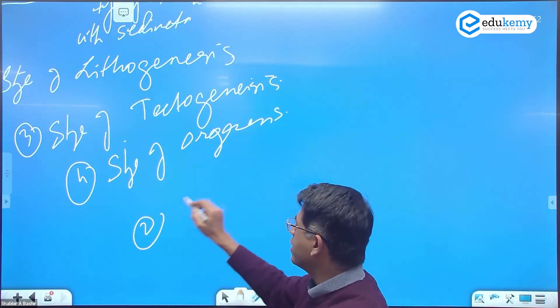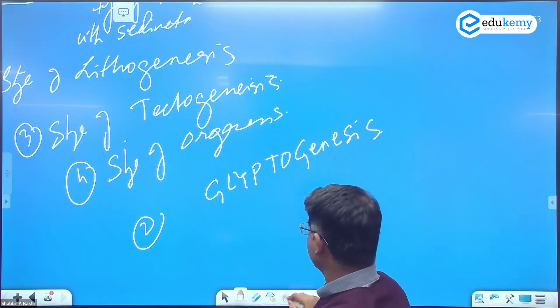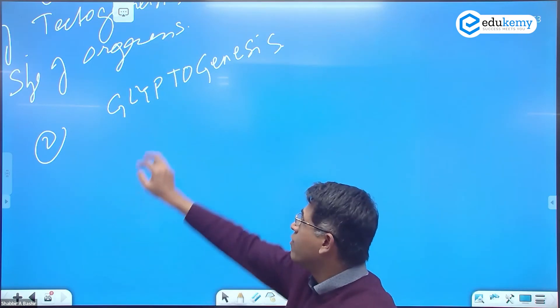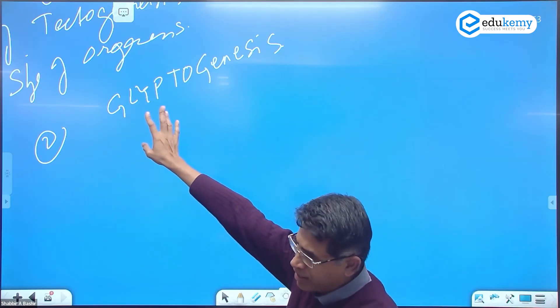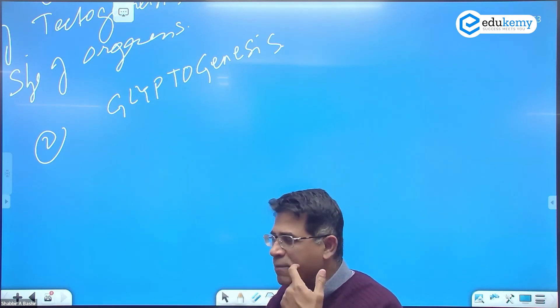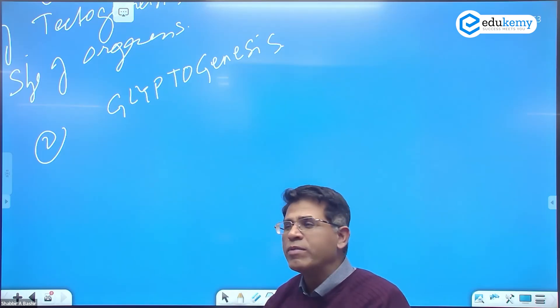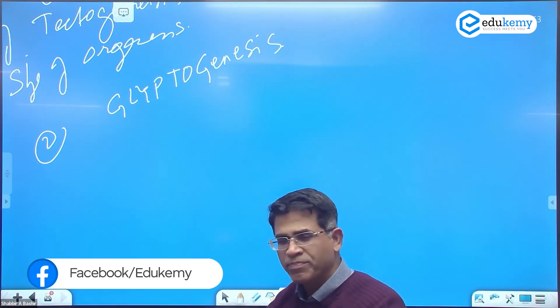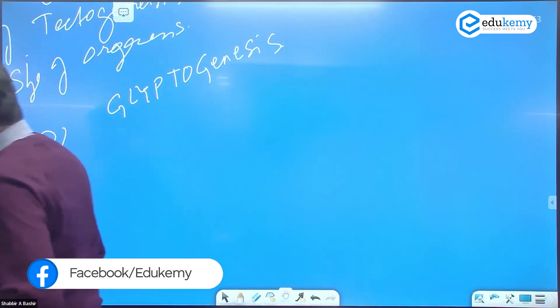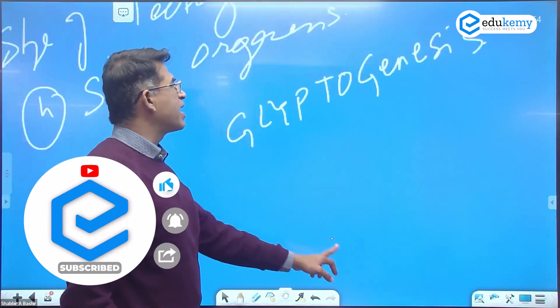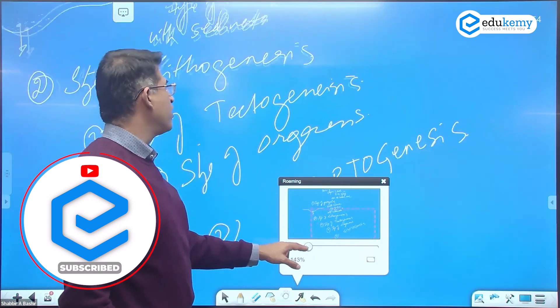The fifth is the stage of glyptogenesis. G-L-Y-P-T-O, glyptogenesis. The word glypto means death. The stage of erosion of a mountain. Think of Aravallis, erosion is happening. Think of Appalachians. The stage of erosion. So what's left behind will be the residual mountains, small hills and residual mountains. Aravallis, the eastern ghats, the Ural mountains are examples. These are the five stages of fold mountain building according to Cober's geosyncline theory of mountain building.